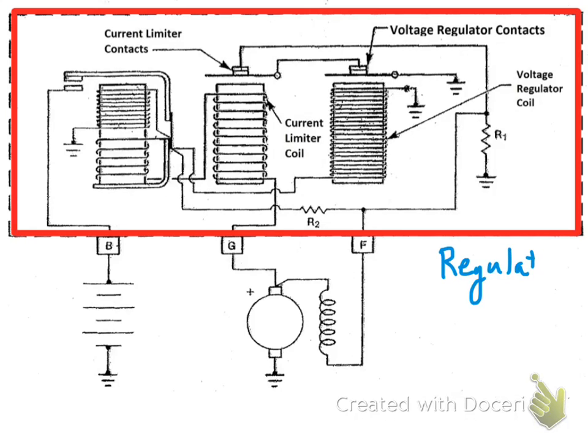All right, so here's the vibrating point regulator, and this is the A-type. Everything in the box is included in the regulator. And then down on the bottom we have our actual generator. Everything in the red circle is inside the generator, so you see the armature and the field winding.